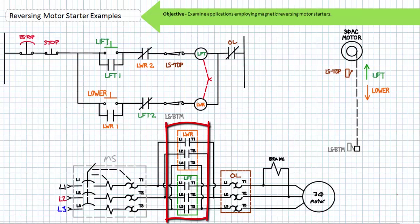As you'll recall, a reversing magnetic motor starter uses paired contactors to selectively reverse a motor. The reversing contactor is wired such that two phases are interchanged, thereby the applied phase sequence as seen by the motor changes the direction of the rotating magnetic field produced by the stator. The contactors are ordinarily interlocked via mechanical, electrical, or push button means to prevent phase-to-phase contact.